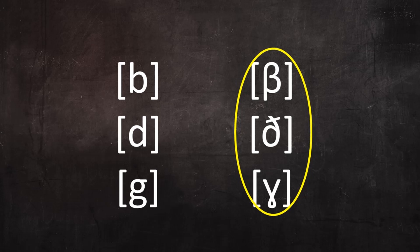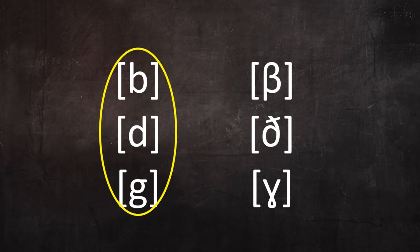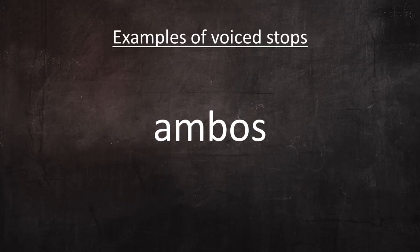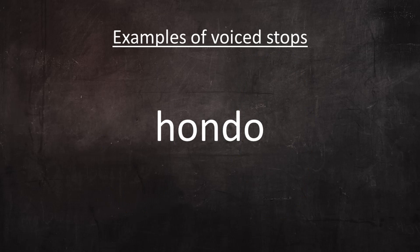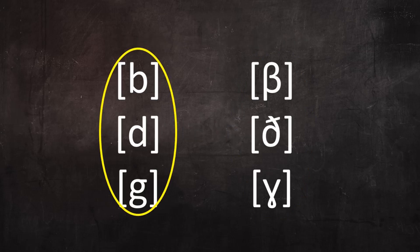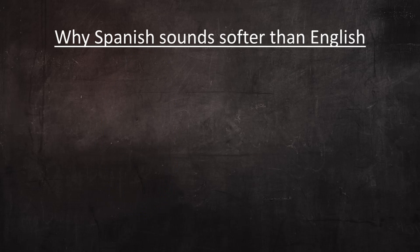But it's important to remember that the voiced stops are pronounced much like their English equivalent in certain contexts. Observe these examples. Ambos. Hondo. Mango. I hope you can hear that in these contexts, B, D, and G are pronounced as stops and sound harder, more like their English counterpart. A quick summary, then, of why Spanish sounds softer than English goes like this.